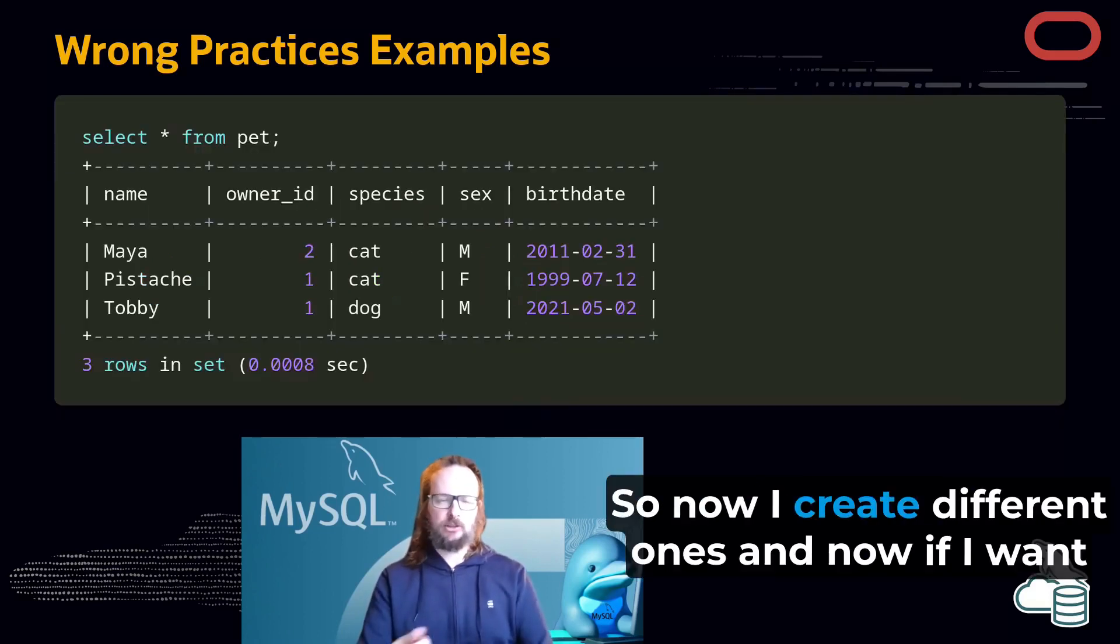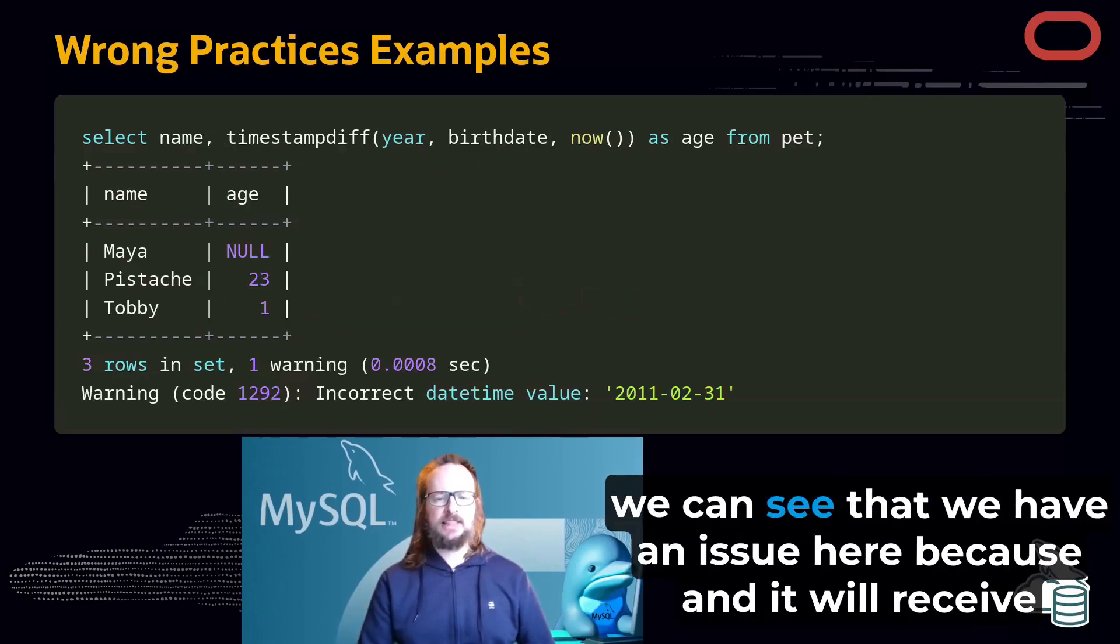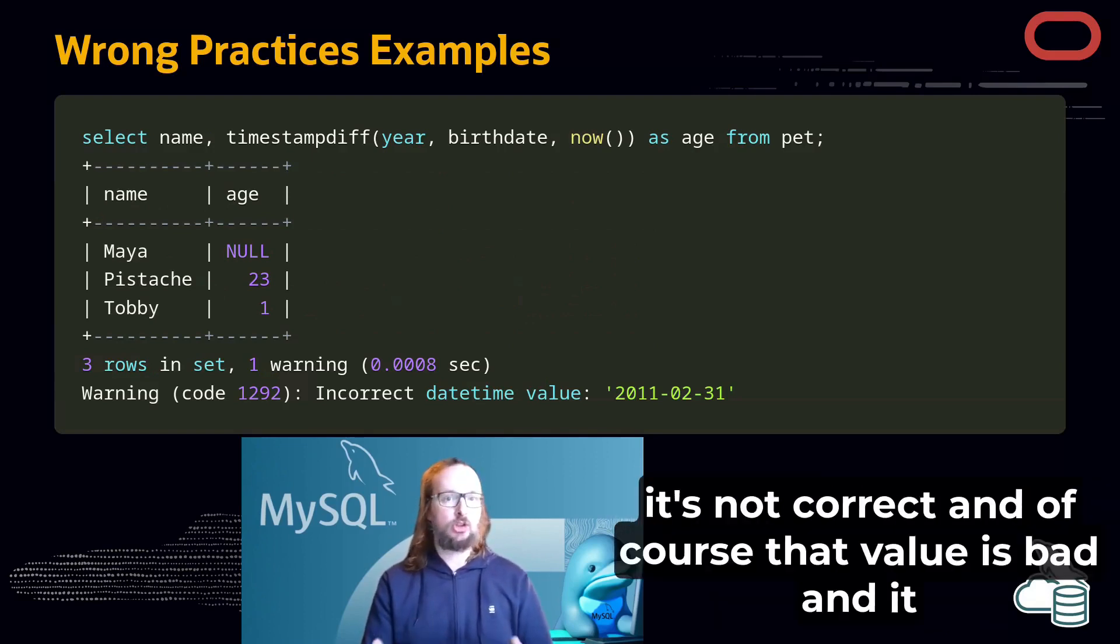So now I create different ones. And now if I want to make a query to see the age of the pet, we can see that we have an issue here, and we receive a warning because the datetime is incorrect to be calculated. So this datetime is not correct.